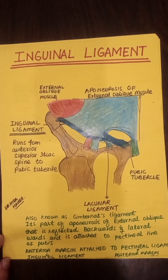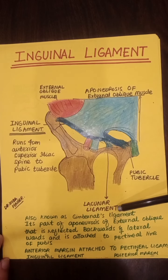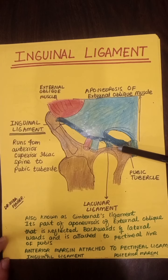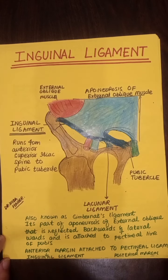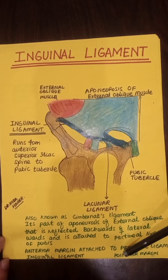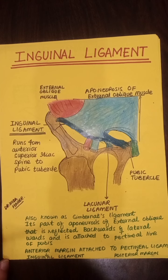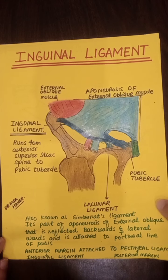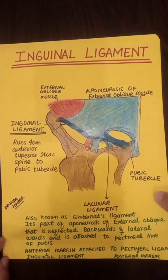Just medially there is the lacunar ligament, also called Gimbernat's ligament. It is the part of the aponeurosis of the external oblique muscle that is reflected backwards and lateralwards to the pectineal line of the pubis. Its anterior margin is attached to the inguinal ligament and the posterior margin is attached to the pectineal ligament. Remember: posteriorly, P starts with the pectineal ligament.